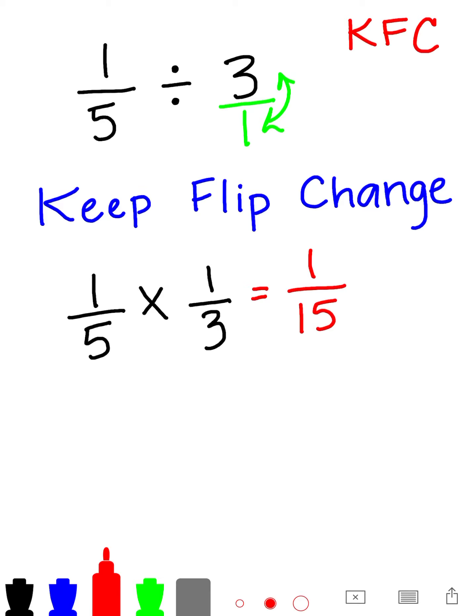In this case, the fraction cannot be reduced, so our answer is 1 over 15. Again, super simple strategy that will help your students remember when they are dividing fractions and whole numbers exactly how to keep all the steps straight.